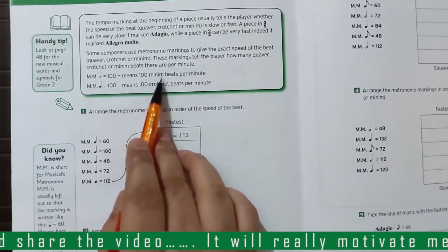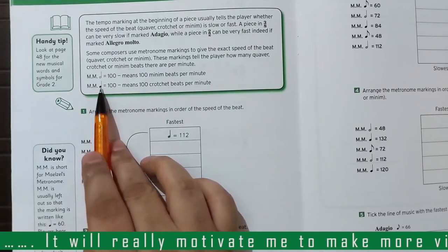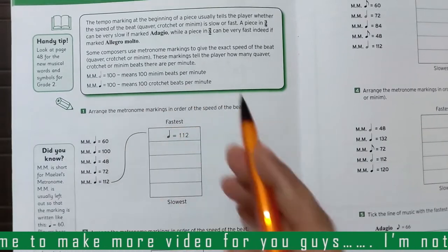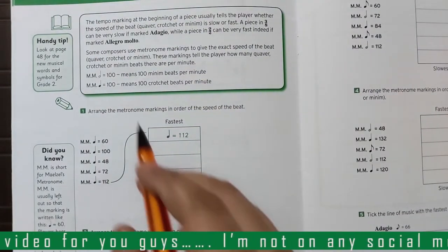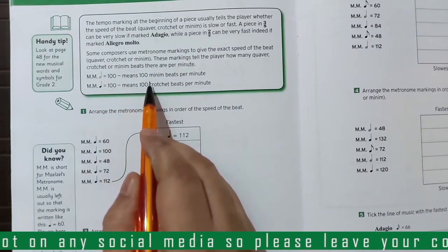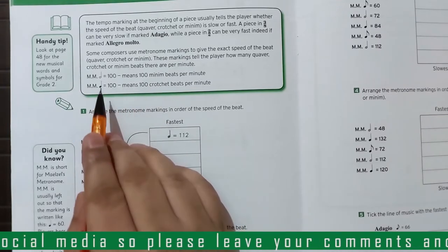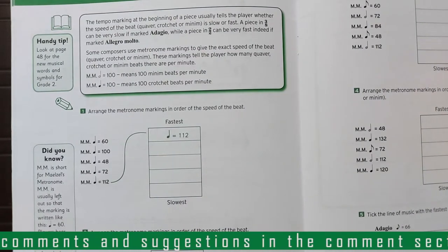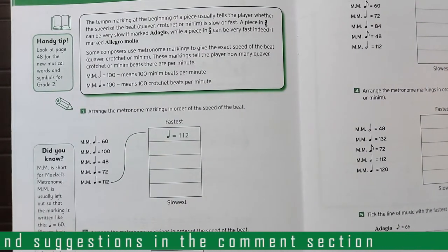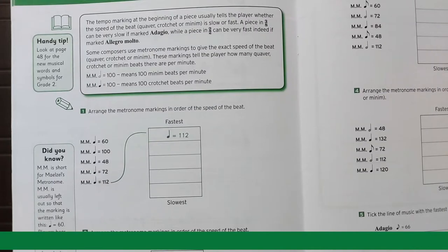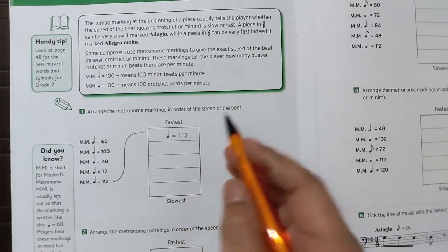For example, if the crotchet equals 100, that means 100 crotchet beats per minute. If you see a quaver beat at 100 beats per minute, that is equal speed to a crotchet beat at 100 per minute — there is no difference. So don't get confused: if you see a quaver at 120 speed and a minim at 120 speed, they will both be the same speed.